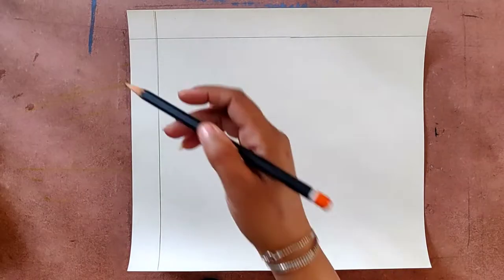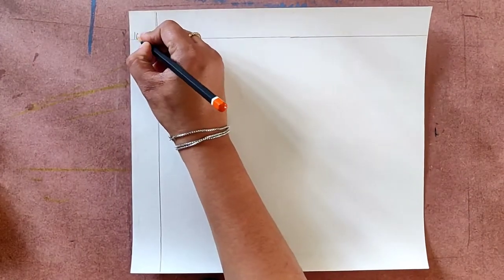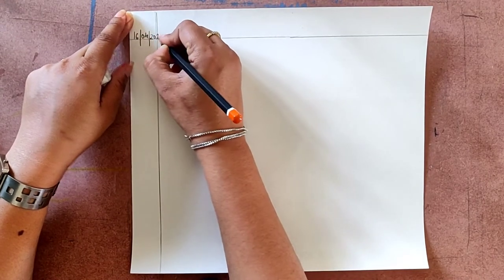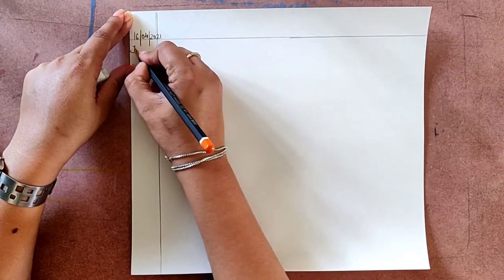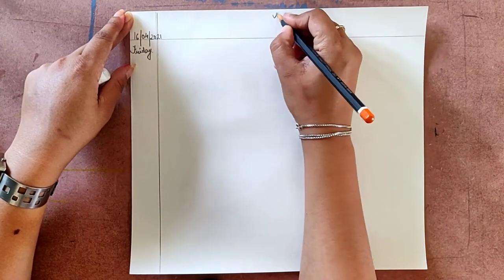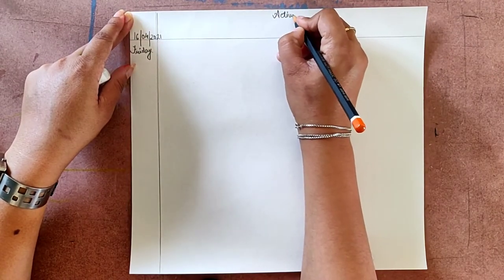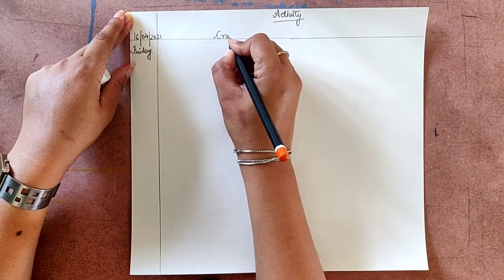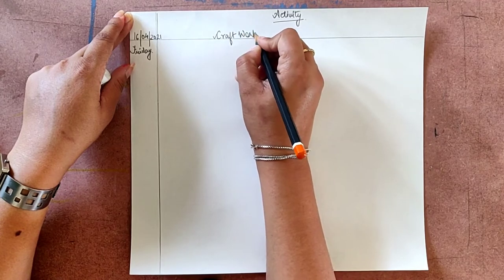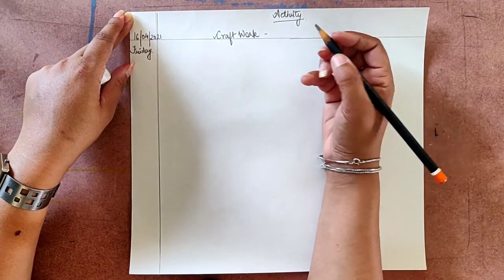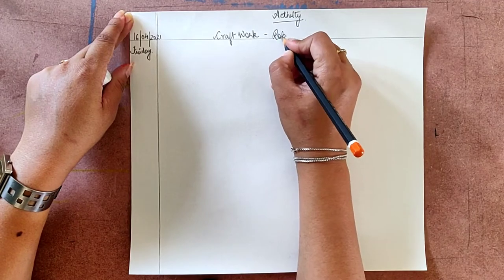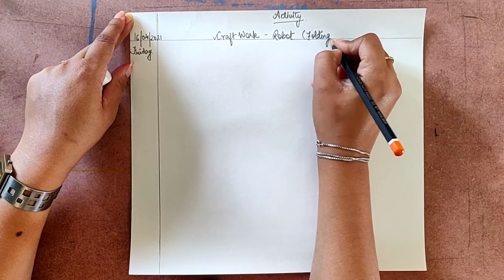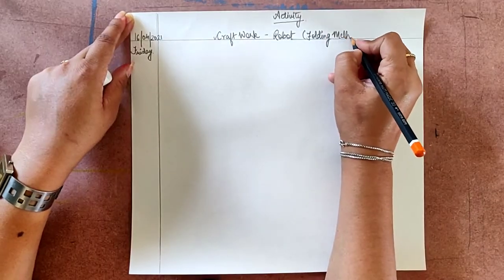So children, first draw margins. Write down today's date, 16th, 1604, 2021. Day is Friday. Activity. This is your craft work and they will be making robot by folding method.